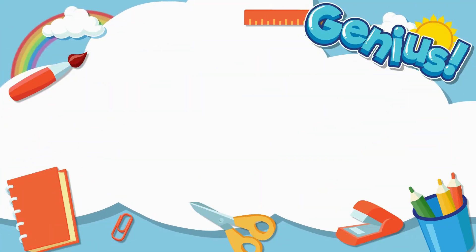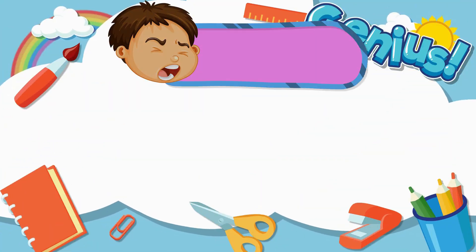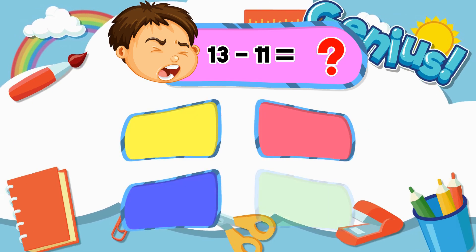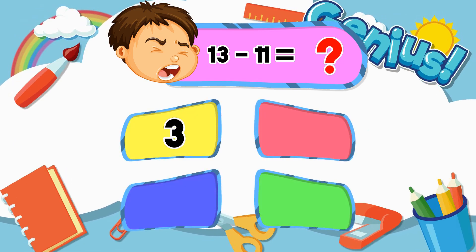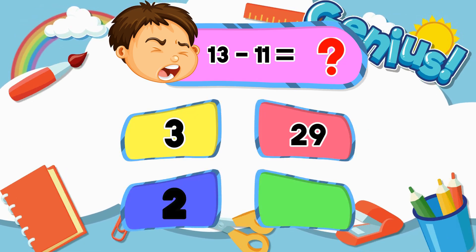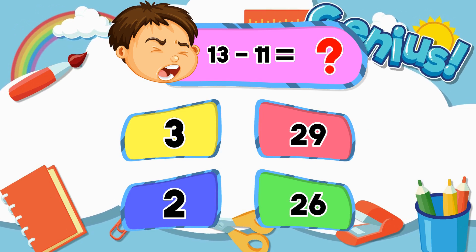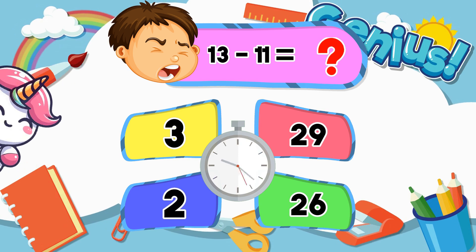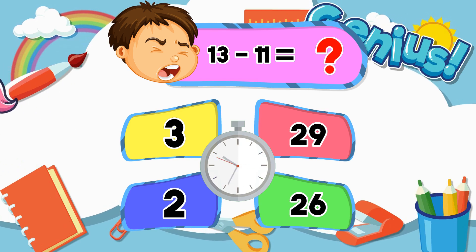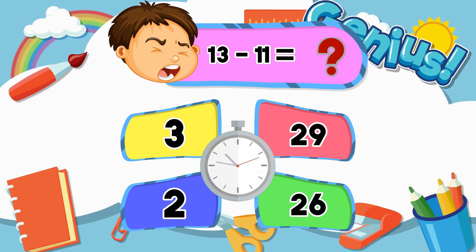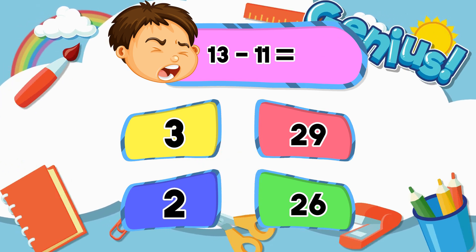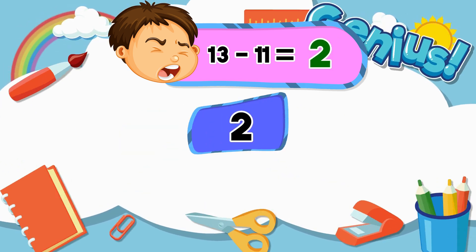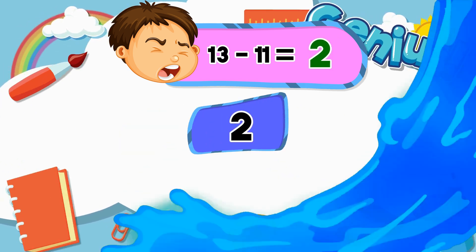What is 13 minus 11? 3, 29, 2, 26. Answer: 2. Thank you.